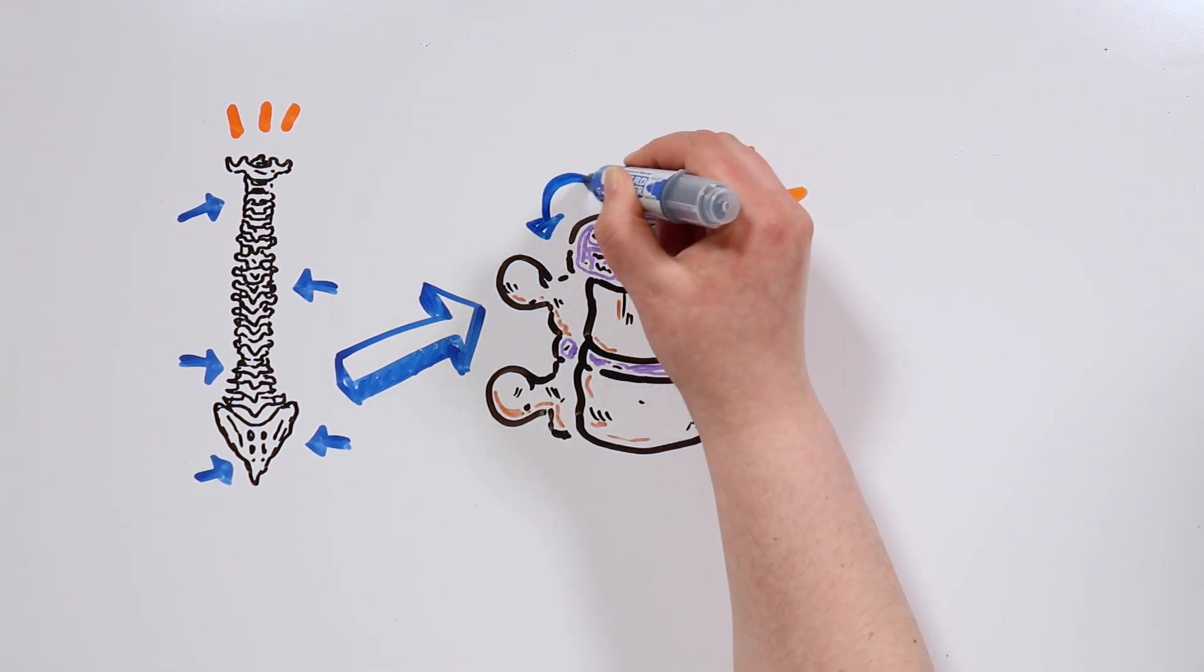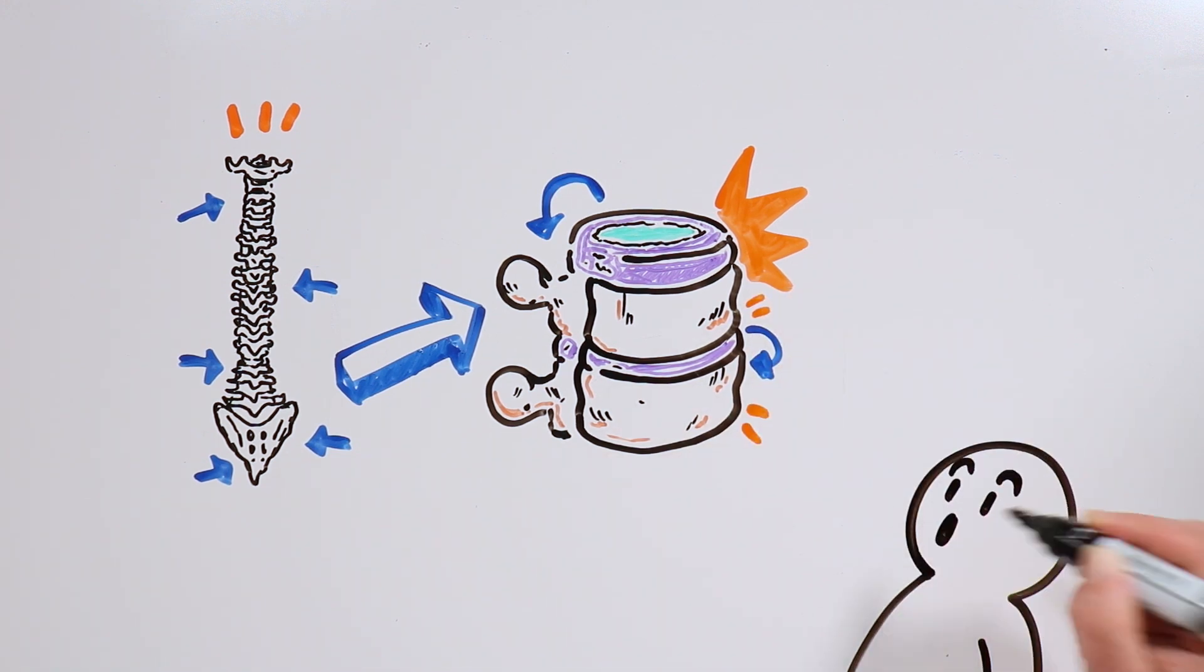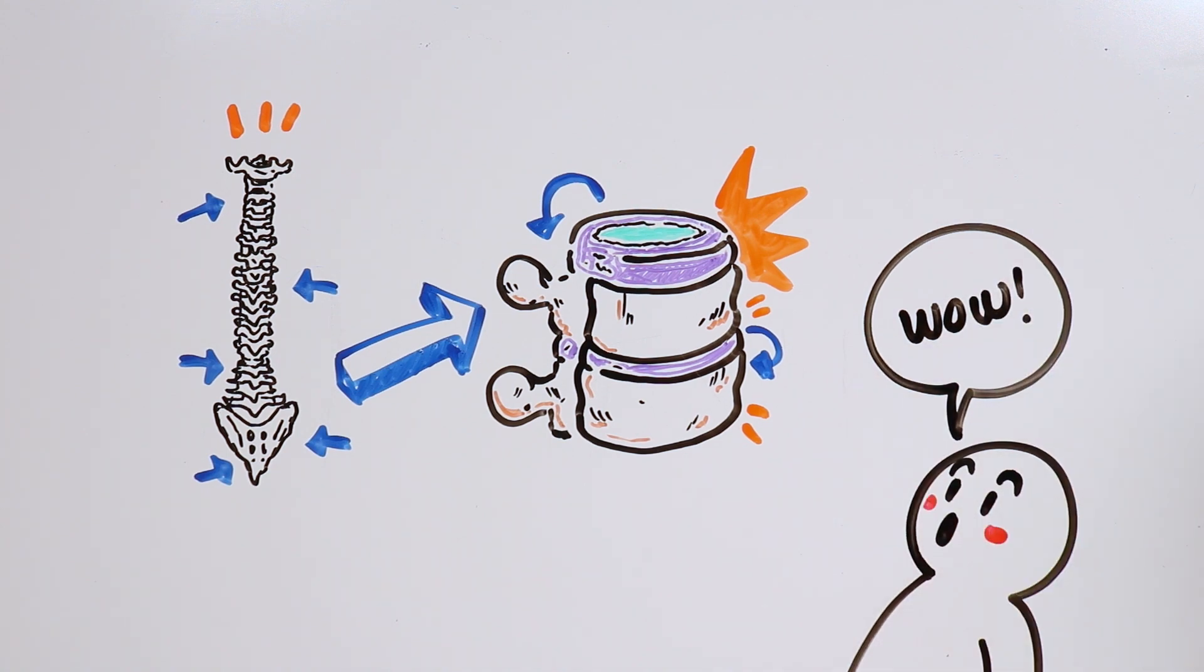These cushions protect our vertebrae so that they don't scrape against each other, and also act kind of like shock absorbers for our body.